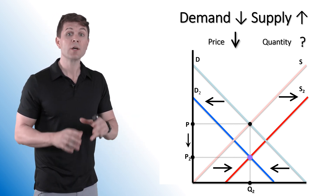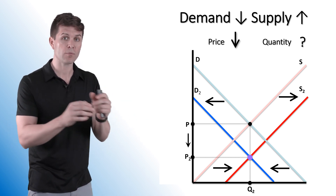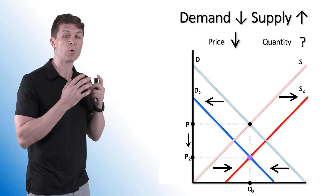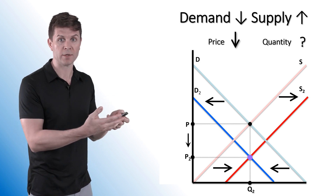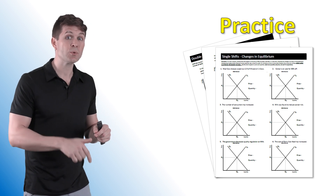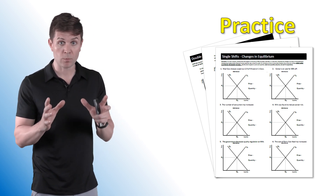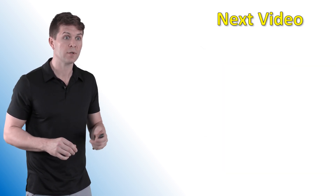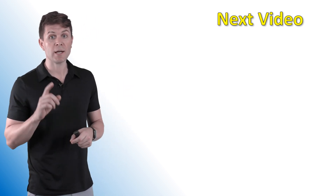Just keep in mind, for single and double shifts there are only four possible combinations each — four single shifts and four double shifts, so there isn't a whole lot to this. It's more important that you remember what determinants will shift each of the curves and then just respond to that in the question. I've provided a few practice worksheets linked in the description below — one sheet of single shifts identifying what happens to price and quantity, and two sheets of double shifts for extra practice. Make sure you check out the next video. Thank you guys so much for watching, see you next time.